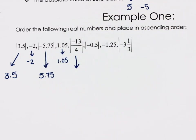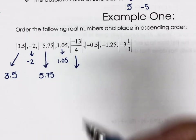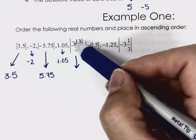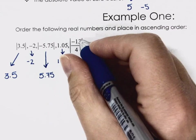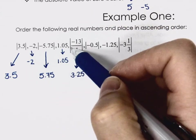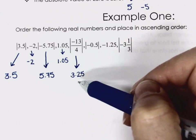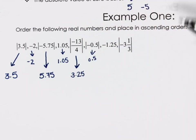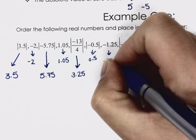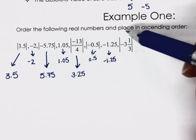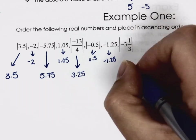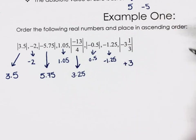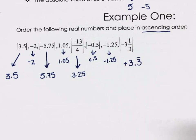I'm going to convert this next one to a decimal to help. The absolute value bracket takes the negative away — I did the division and that's 3.25, so the absolute value of negative thirteen over four is 3.25. The next one evaluates to 0.5. This one has no brackets around it so it stays as negative 1.25. And this last one, the absolute value takes away the negative, giving us 0.3 repeating.